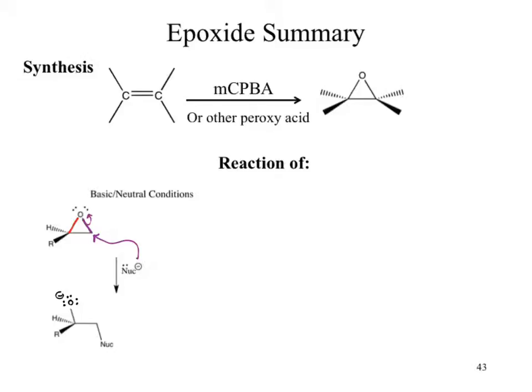We would end up with the charge structure shown below. What is the arrangement of the oxygen versus our nucleophile? They are anti — on opposite sides of our ring structure, or on opposite sides of our starting alkene if we go all the way back. We have to make sure that our structure shows that.